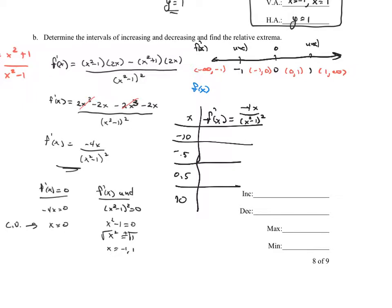Since the denominator is squared, it's always positive, so only the numerator's sign matters. For negative 10: negative 4 times negative 10 is positive — positive over positive is positive, so the first interval is positive. For negative 0.5: negative 4 times negative 0.5 is also positive, so the second interval is positive. For 0.5: negative 4 times positive 0.5 is negative — negative over positive is negative, so the third interval is negative. For 10: negative 4 times 10 is negative, so the fourth interval is also negative.